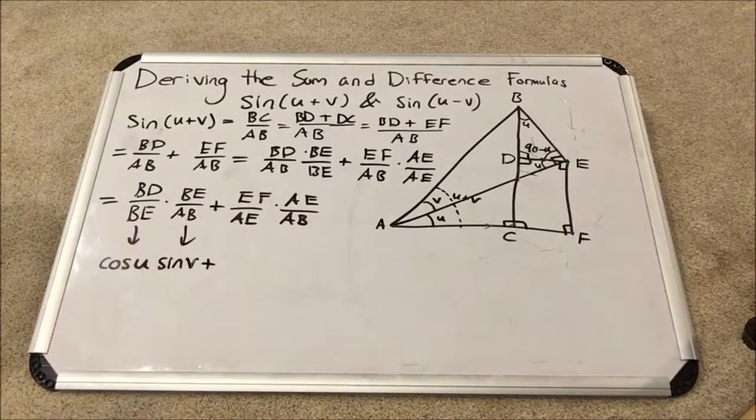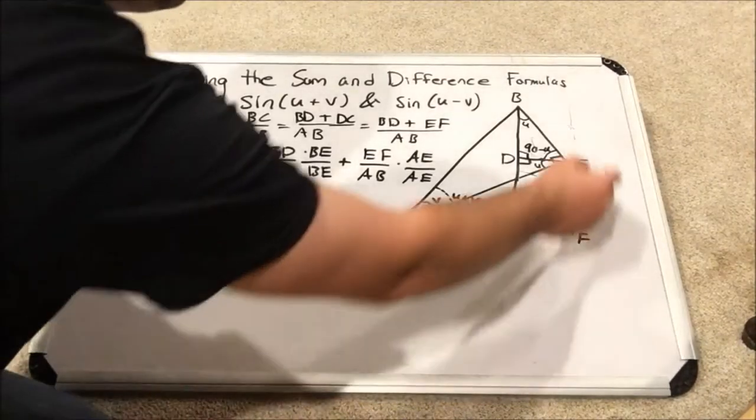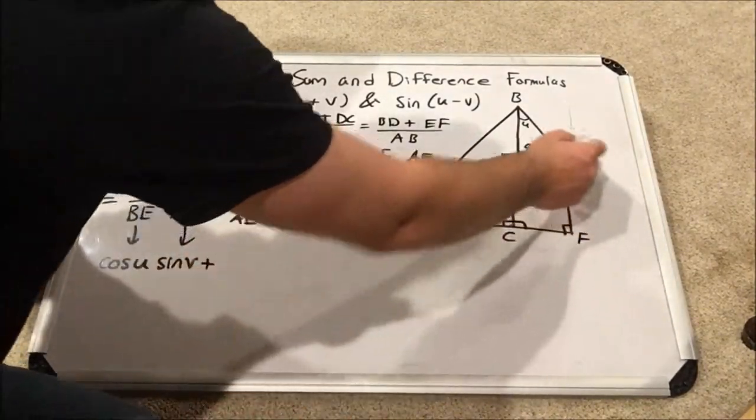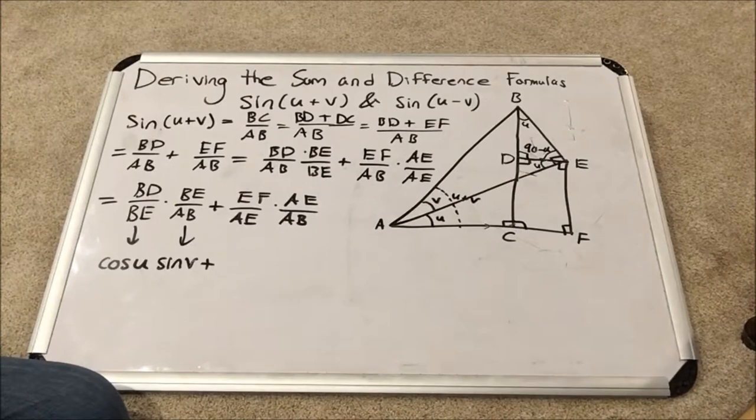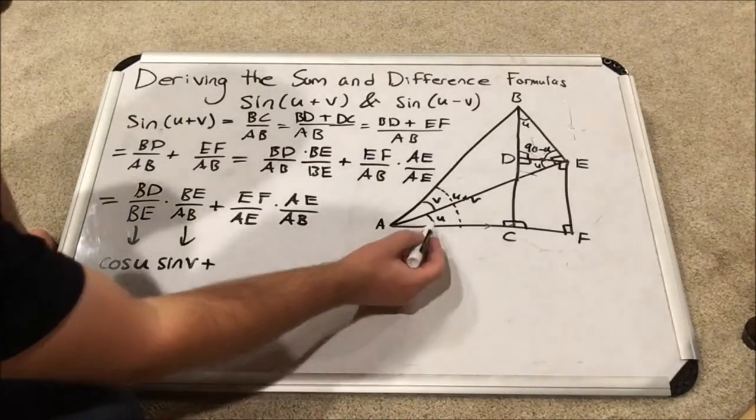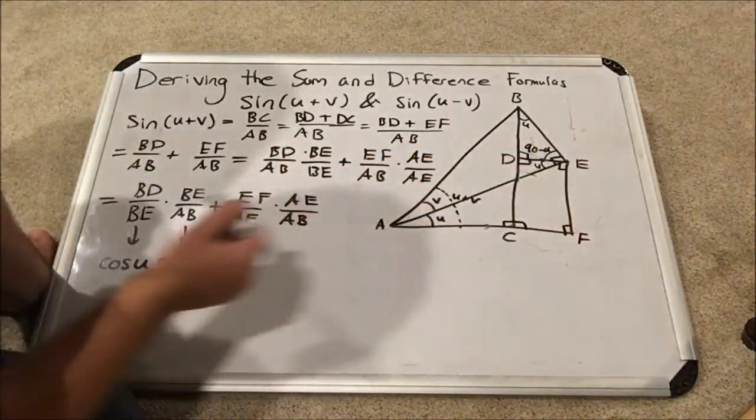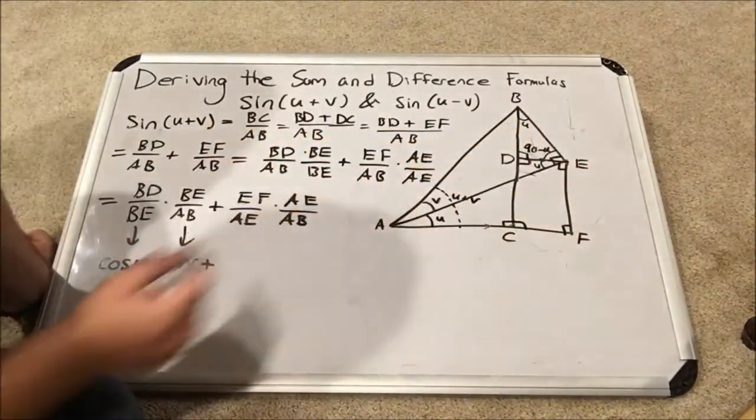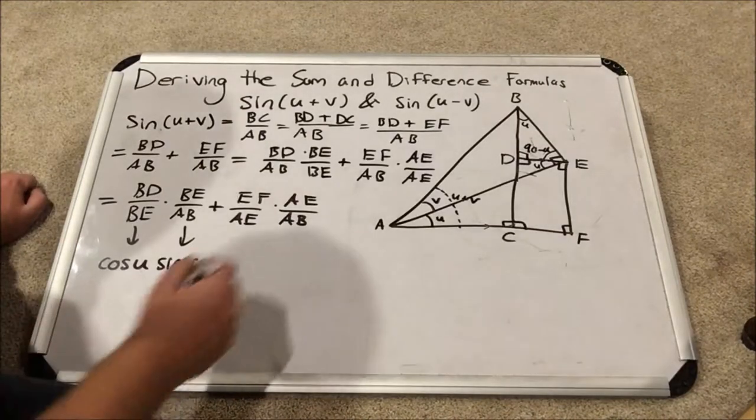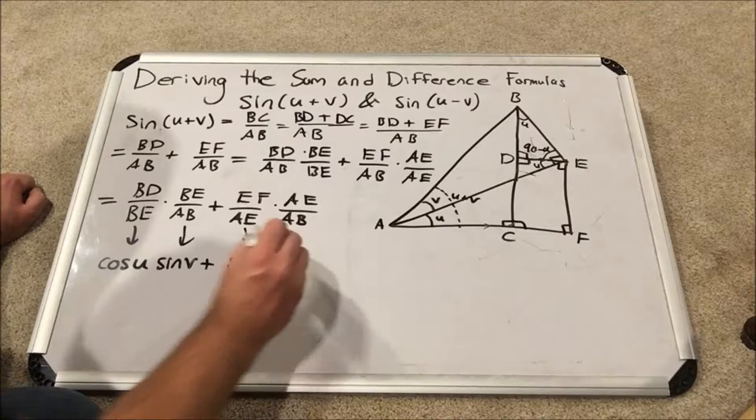Next we have EF over AE. So those two lines are a part of this triangle here, this lower right triangle, the larger one. And you can see that, according to angle U, EF over AE is opposite over hypotenuse for angle U. So EF over AE is the sine of U.